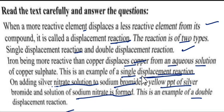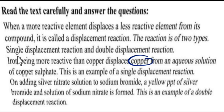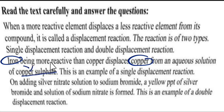In the first case, copper was displaced by iron from copper sulfate, forming iron sulfate, and copper was displaced out. That is an example of single displacement.